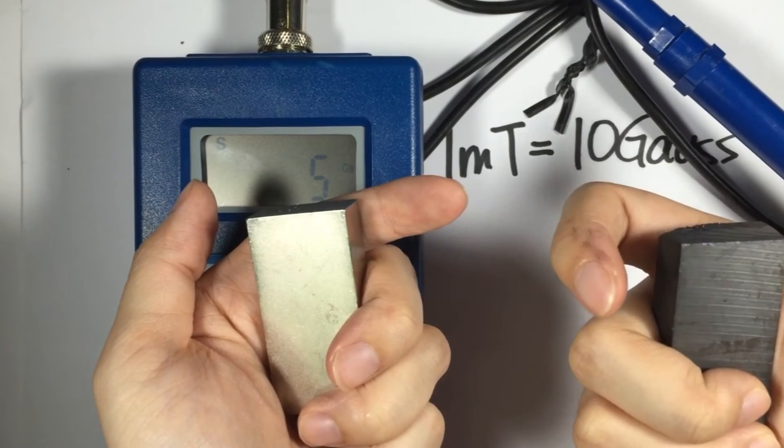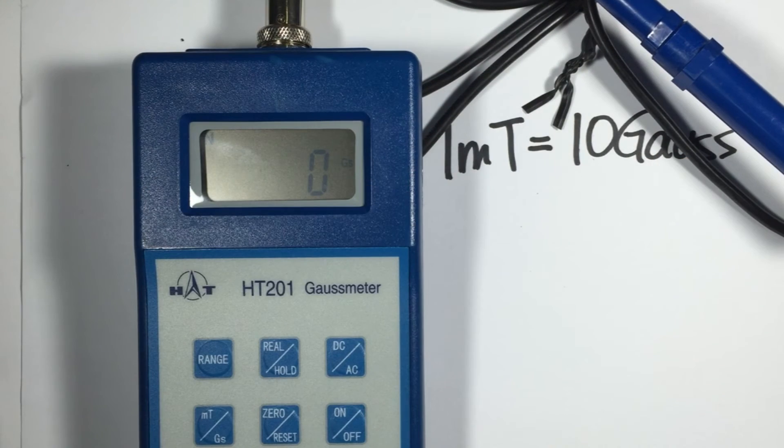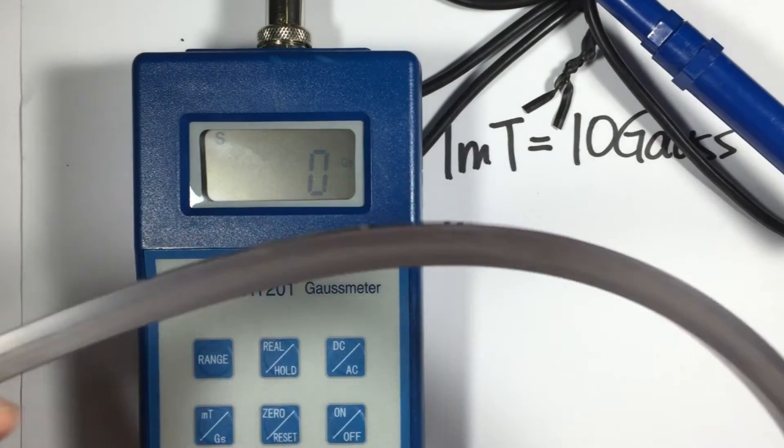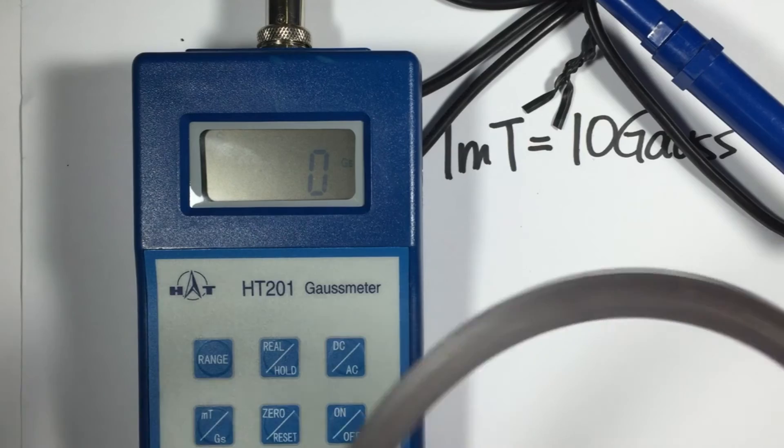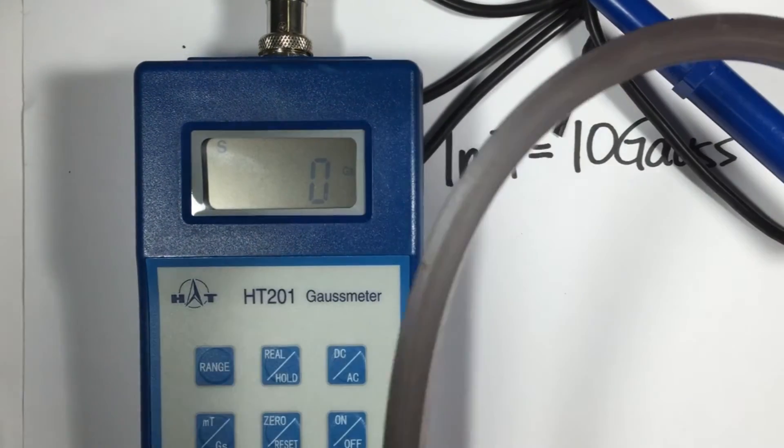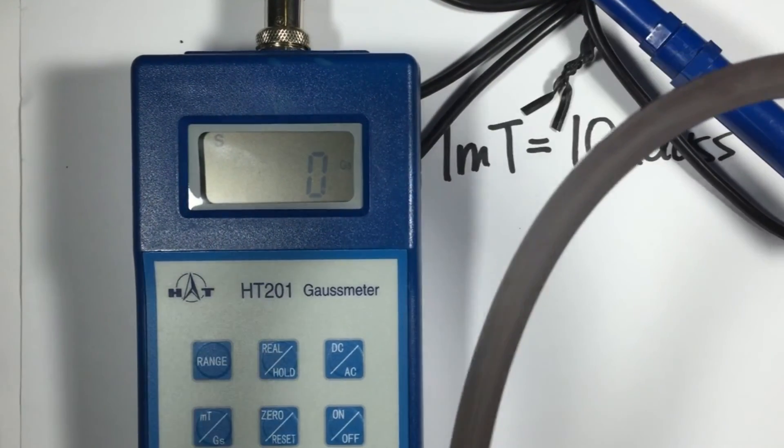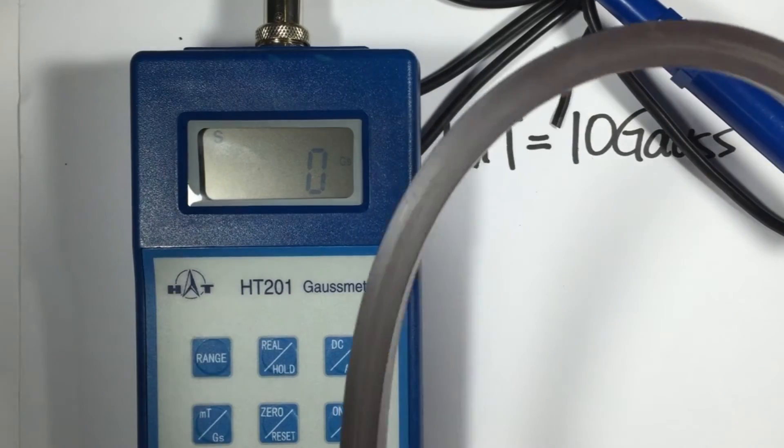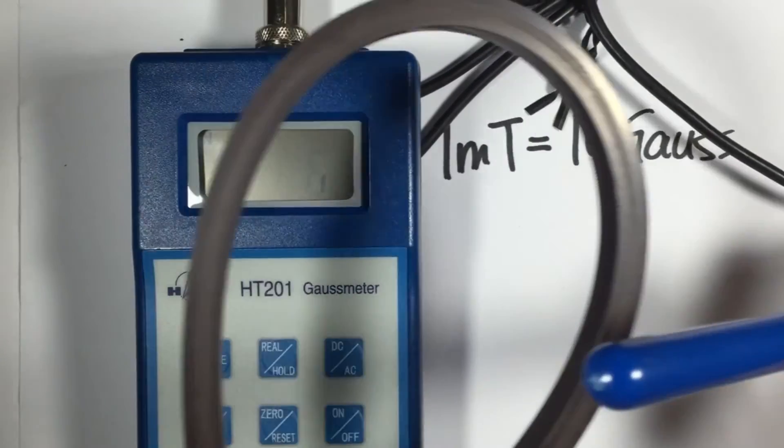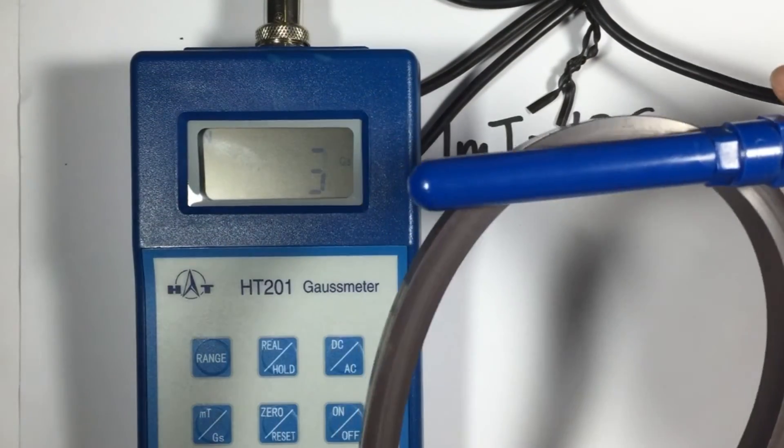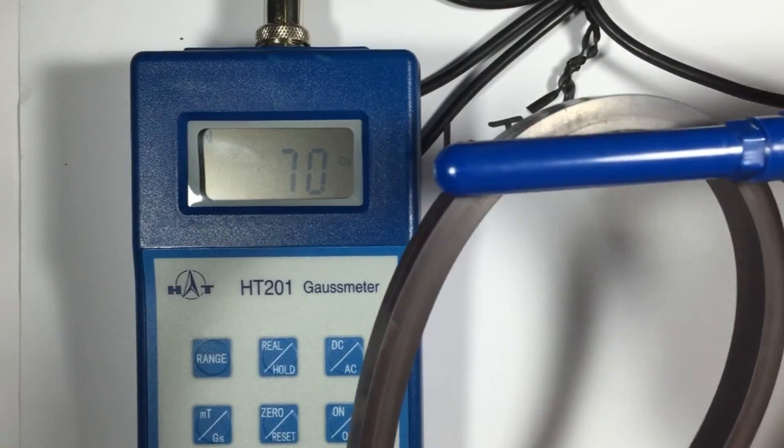Last but not least we have the rubber magnet, which we both know it's pretty weak, but this one is the stronger type. If you check out the first video about the different types of magnets, we have two types of rubber magnets. This one's the stronger type, the anisotropic rubber magnet. So you can see here it reaches 100, which is pretty impressive for a rubber magnet.